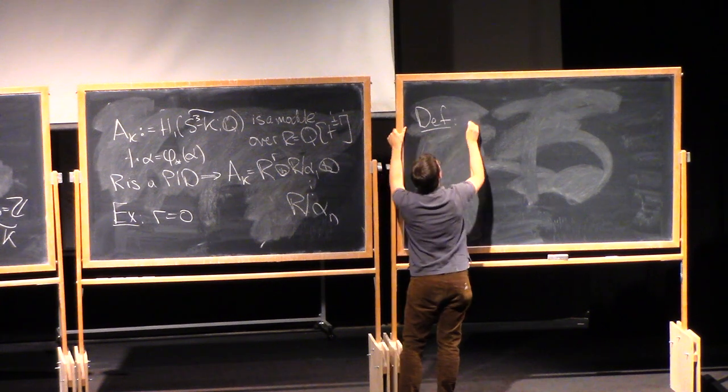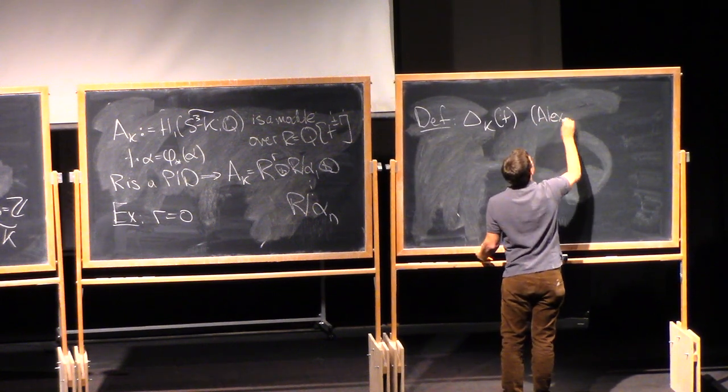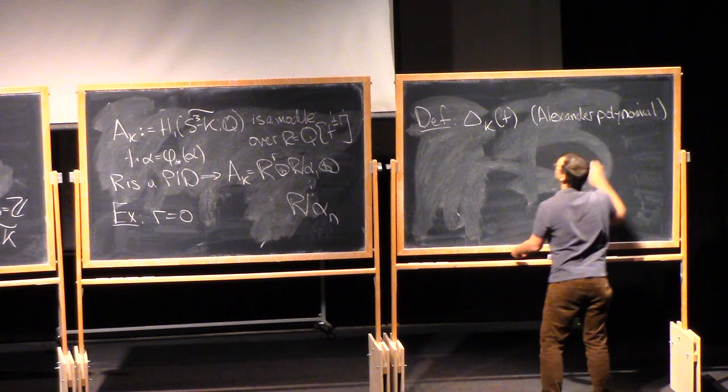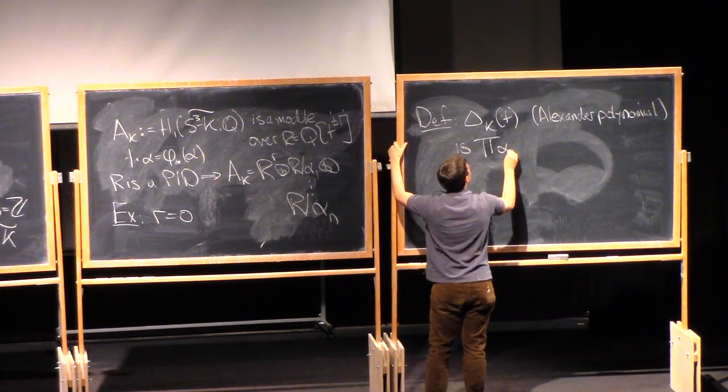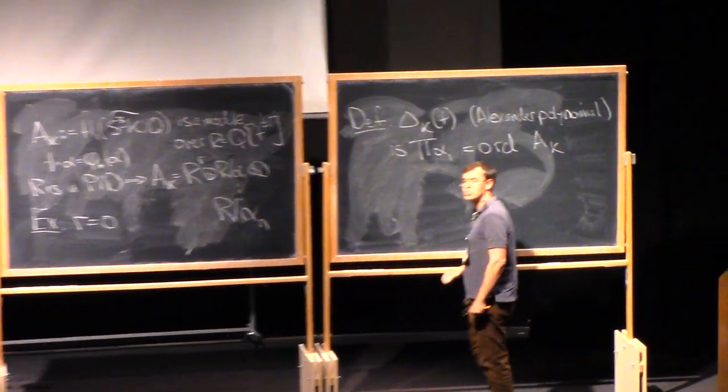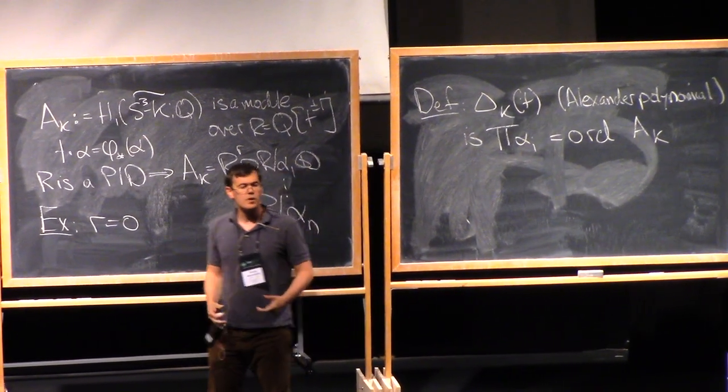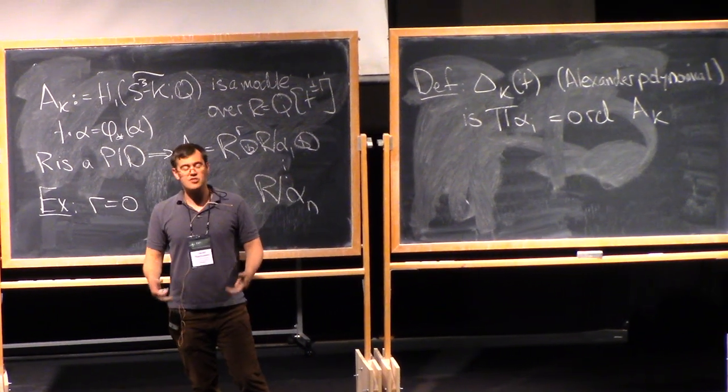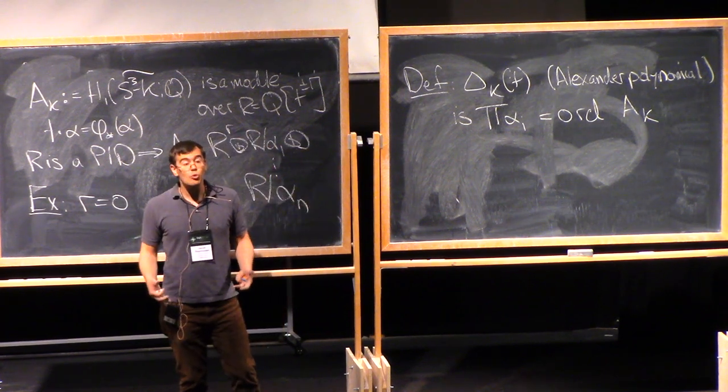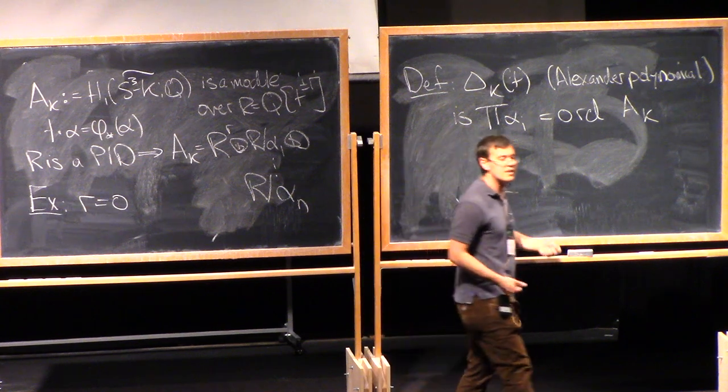AK is some number of copies of R. So I should have said it's a finitely generated module. Plus some torsion stuff. It's a thing that looks like R mod alpha 1 plus up through R mod alpha n. And now here's a little exercise. Actually, this free part is always trivial. This is always a torsion module. R is 0. And now what we'll do is we'll do the simplest thing that we could possibly do to get an invariant out of this module.